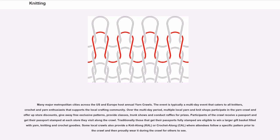Many major metropolitan cities across the U.S. and Europe host annual yarn crawls. The event is typically a multi-day event that caters to all knitters, crochet and yarn enthusiasts, and supports the local crafting community. Multiple local yarn and knit shops participate and offer store discounts, free exclusive patterns, classes, trunk shows, and raffles for prizes. Participants receive a passport and get it stamped at each store they visit; those that get their passports fully stamped are eligible to win a larger gift basket filled with yarn, knitting and crochet goodies. Some local crawls also provide a knit along (KAL) or crochet along (CAL), where attendees follow a specific pattern and then wear it during the crawl.